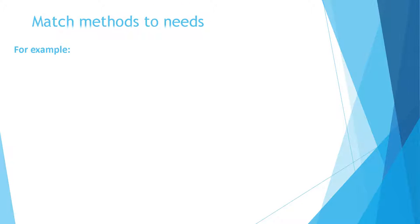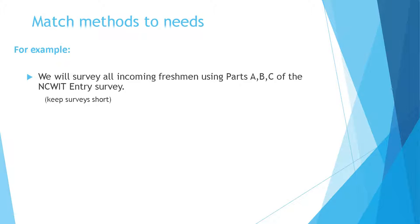It's also very important to match the data collection methods to the kind of data you will really need or use. A lot of people automatically think of surveying participants, but that may not be the type of data that will yield the best return for you or answer your evaluation questions. Here's a method statement example: we will survey all incoming freshmen using parts A, B, and C of the NCWIT entry survey. That survey is in the reading materials accompanying this section.